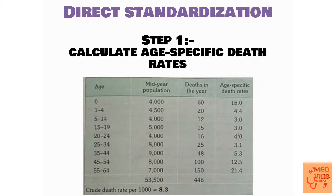At the end of the table we have calculated the crude death rate for this population, which comes to 8.3. Calculating crude death rate does not help us in calculating standardized death rate, but we have included it here to show how crude death rate can differ from standardized death rate and how standardized death rate is more specific. When we calculate crude death rate by dividing total deaths by total mid-year population multiplied by 1,000, it comes to 8.3.